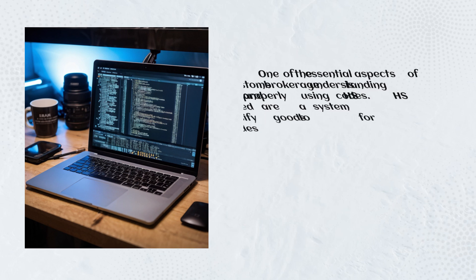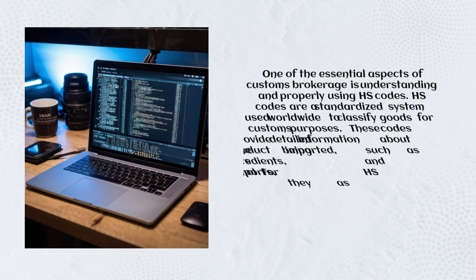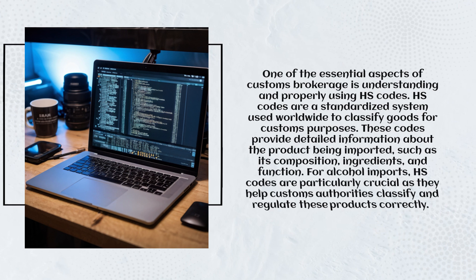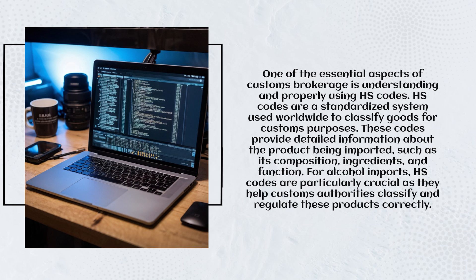One of the essential aspects of customs brokerage is understanding and properly using HS Codes. HS Codes are a standardized system used worldwide to classify goods for customs purposes. These codes provide detailed information about the product being imported, such as its composition, ingredients, and function. For alcohol imports, HS Codes are particularly crucial as they help customs authorities classify and regulate these products correctly.